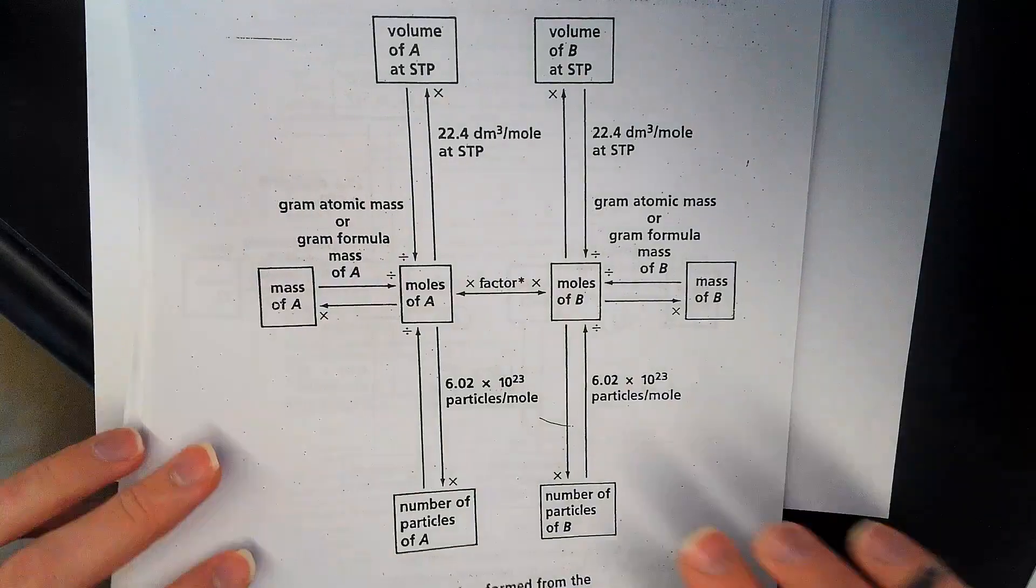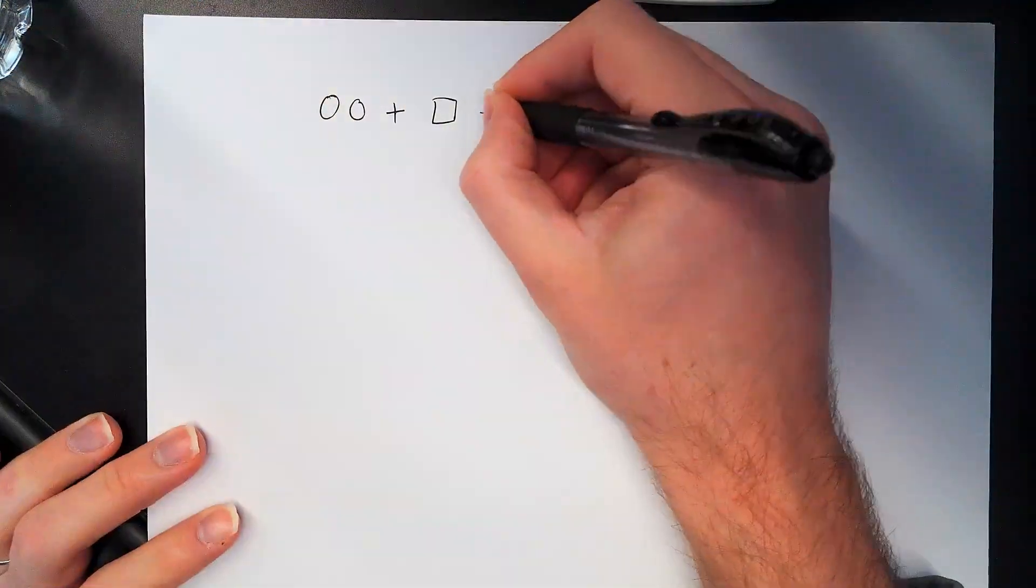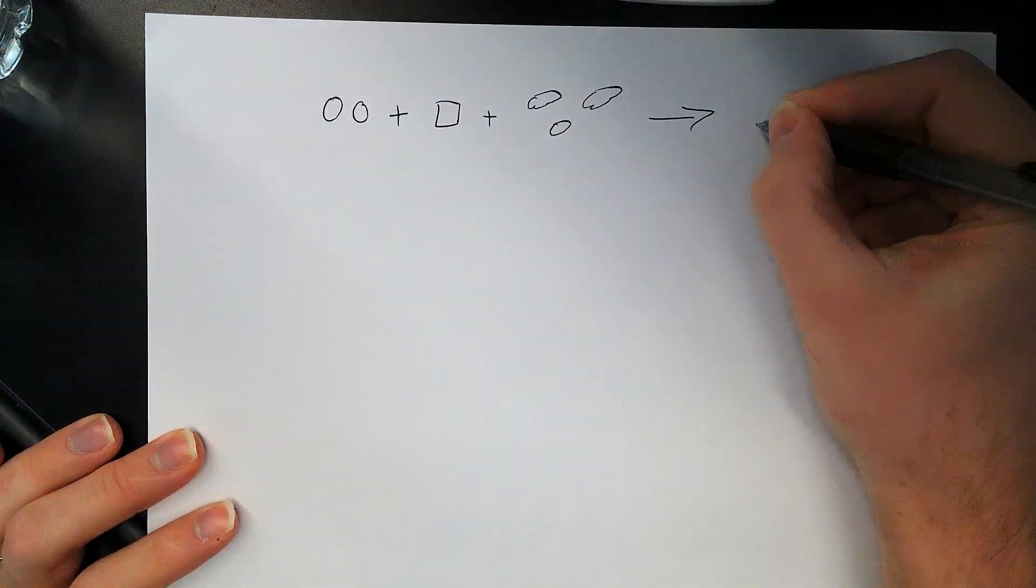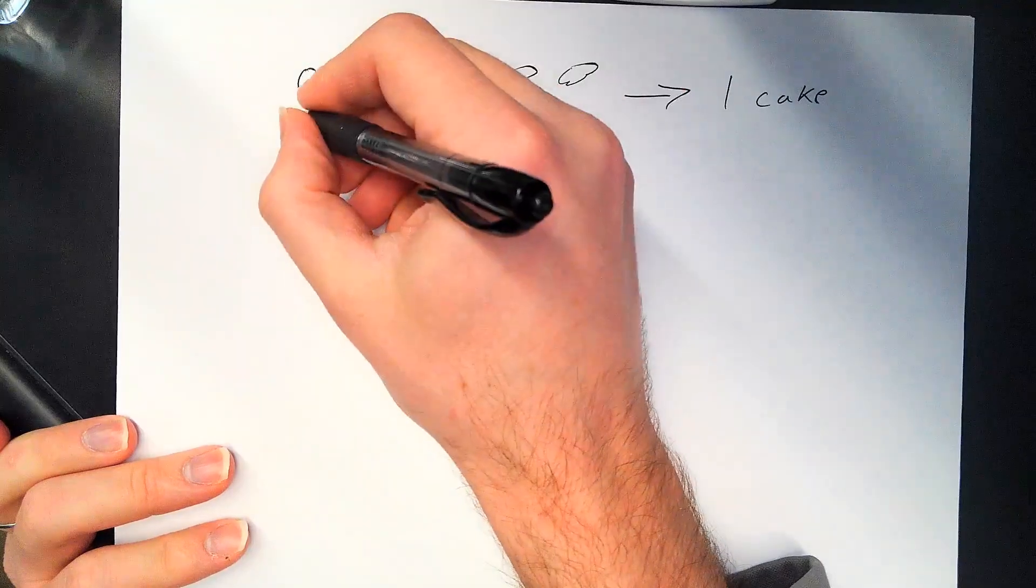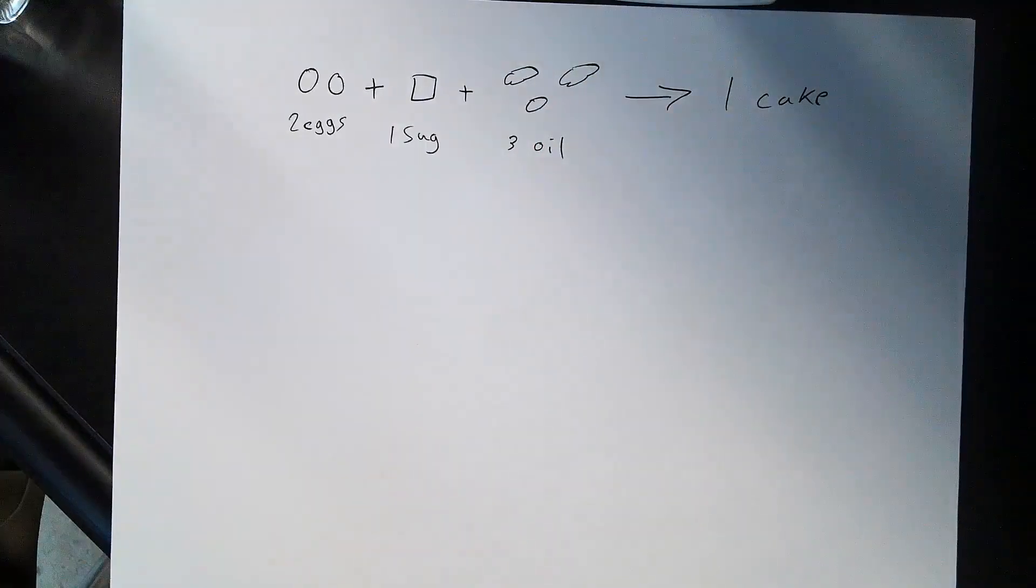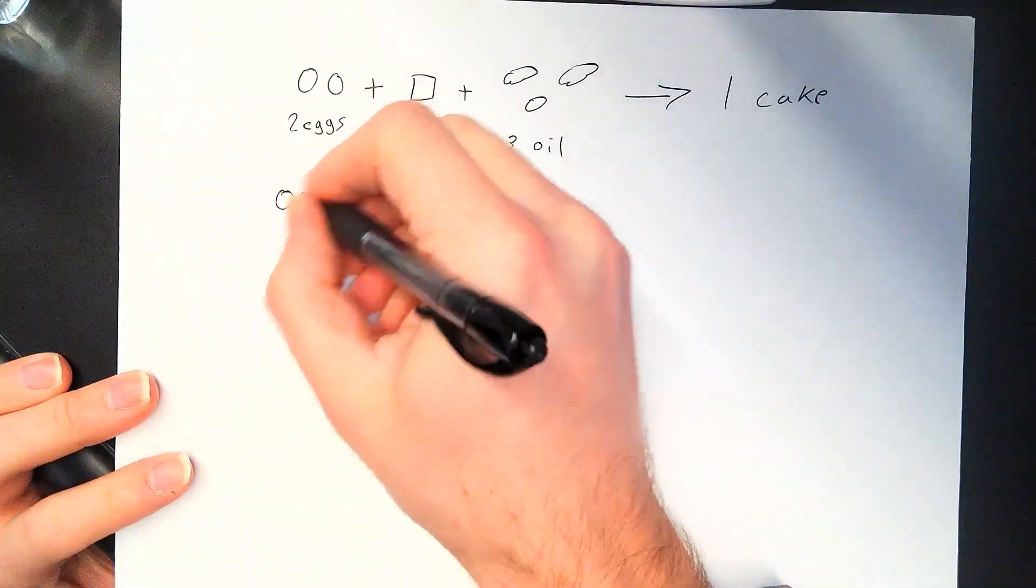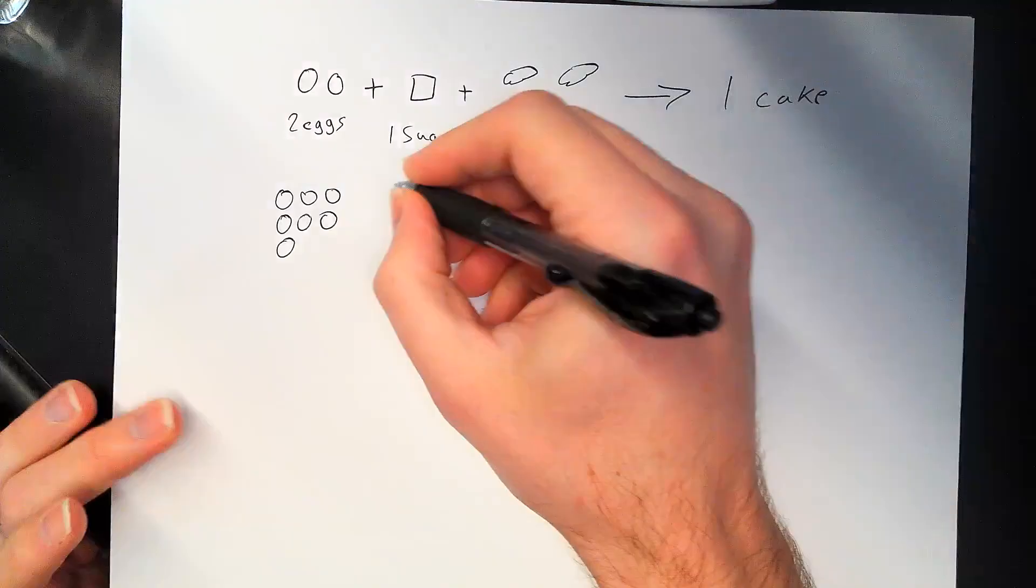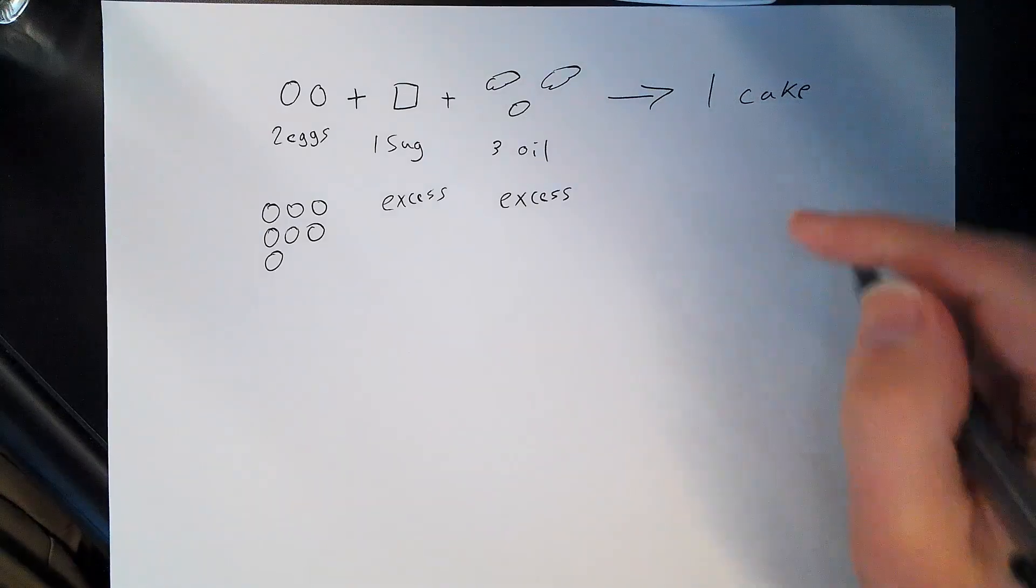So let me start out by reminding you how this works. We already did this in really basic, simple fashion. Remember we talked about this for a minute where it was like let's make our cake. We said that we had two eggs plus a box of sugar plus three oil blobs makes a cake, one cake. It was this great recipe. So we said our two eggs, we got two eggs, one sugar, and then three oil. And we know that makes one cake. We're going to start doing this for real now but with chemicals. If I were to say you've got seven eggs, you've got excess sugar, you've got excess oil - that means you've got more than enough of it - how many cakes am I going to get out of this?